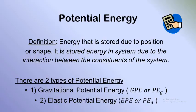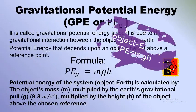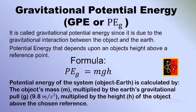Gravitational potential energy depends upon an object's height above the reference point. To calculate GPE at a certain point, we multiply the object's mass by the Earth's gravitational acceleration by the height above the chosen reference. So the formula is: GPE = m × g × h. Note that any point on the reference level has no height, so its gravitational potential energy equals zero.